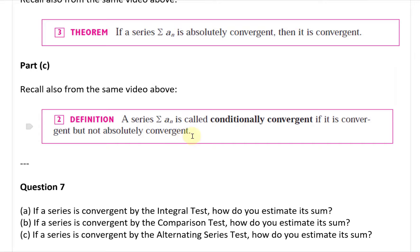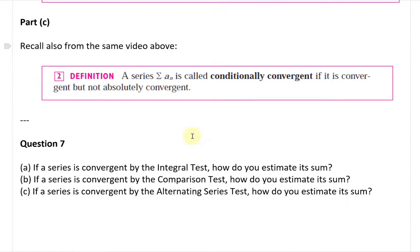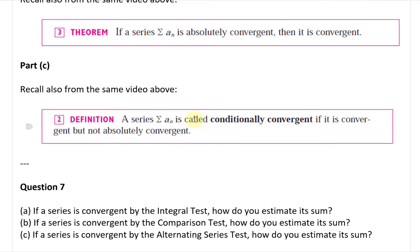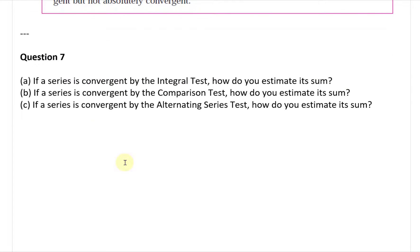Usually what this means is you have a bunch of positive and negative terms canceling out. But if you took the absolute values, they would not be canceling out, so it would diverge otherwise. So conditionally convergent is if it converges, but not absolutely. They're very interesting.